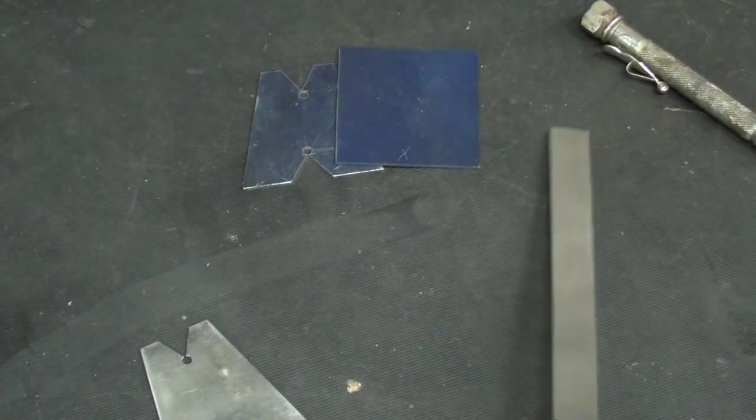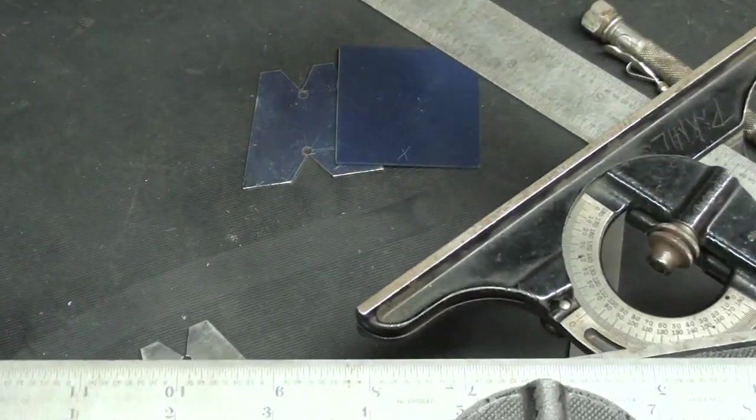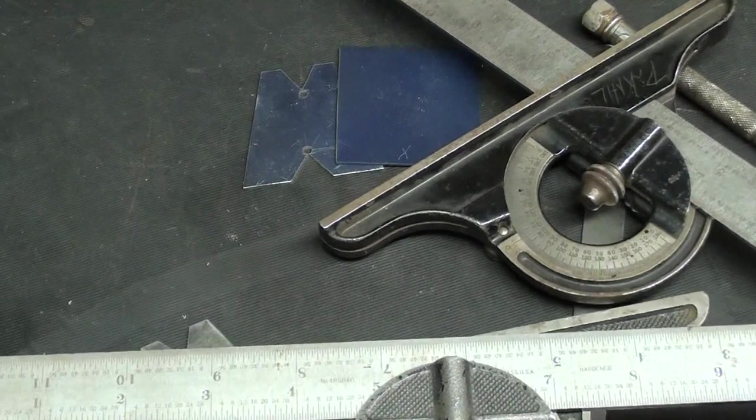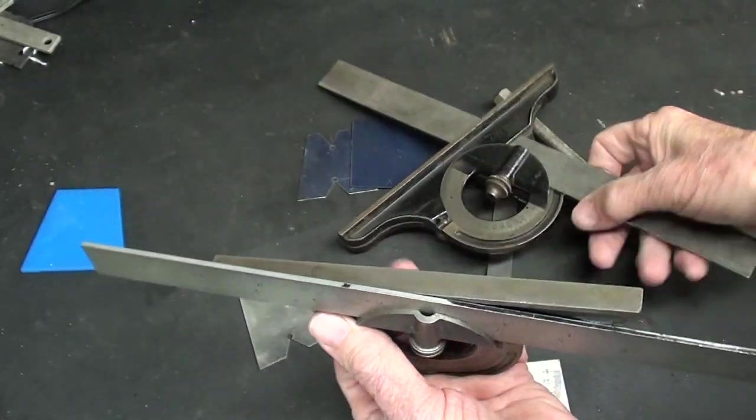However, I prefer the Starrett type of protractors. And, you know, there's two different kinds here. This one, well, let me hold them together. The blade goes through the head, whereas on this one, it's off to the side.